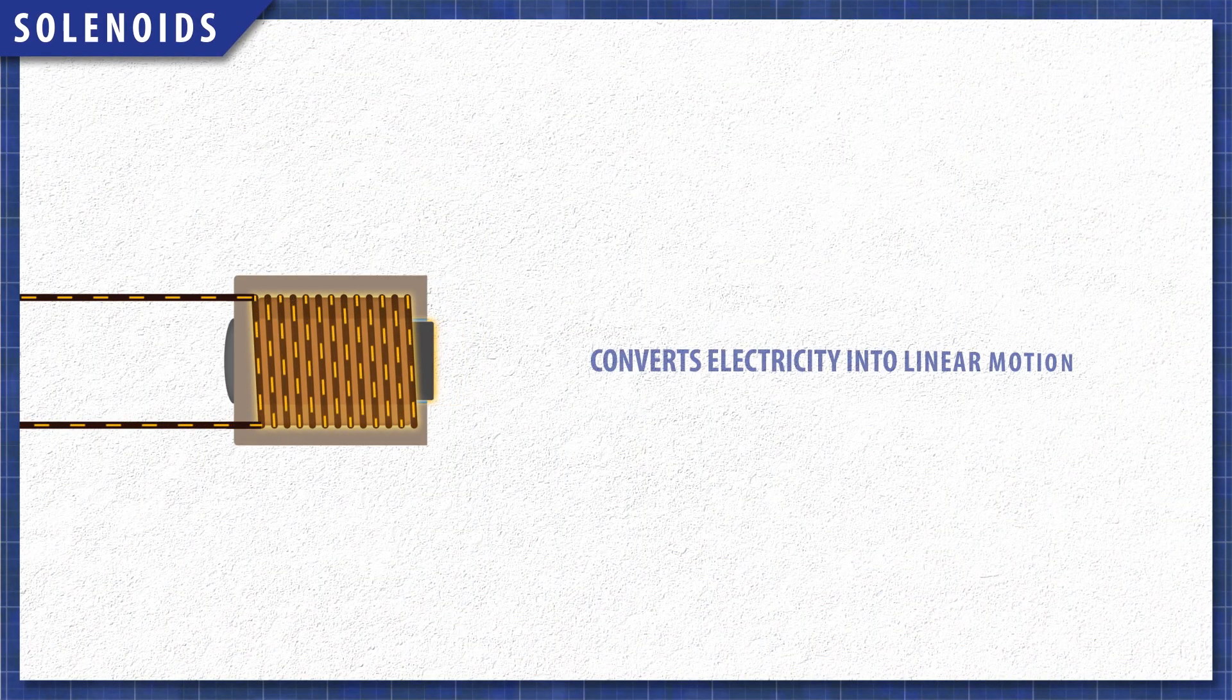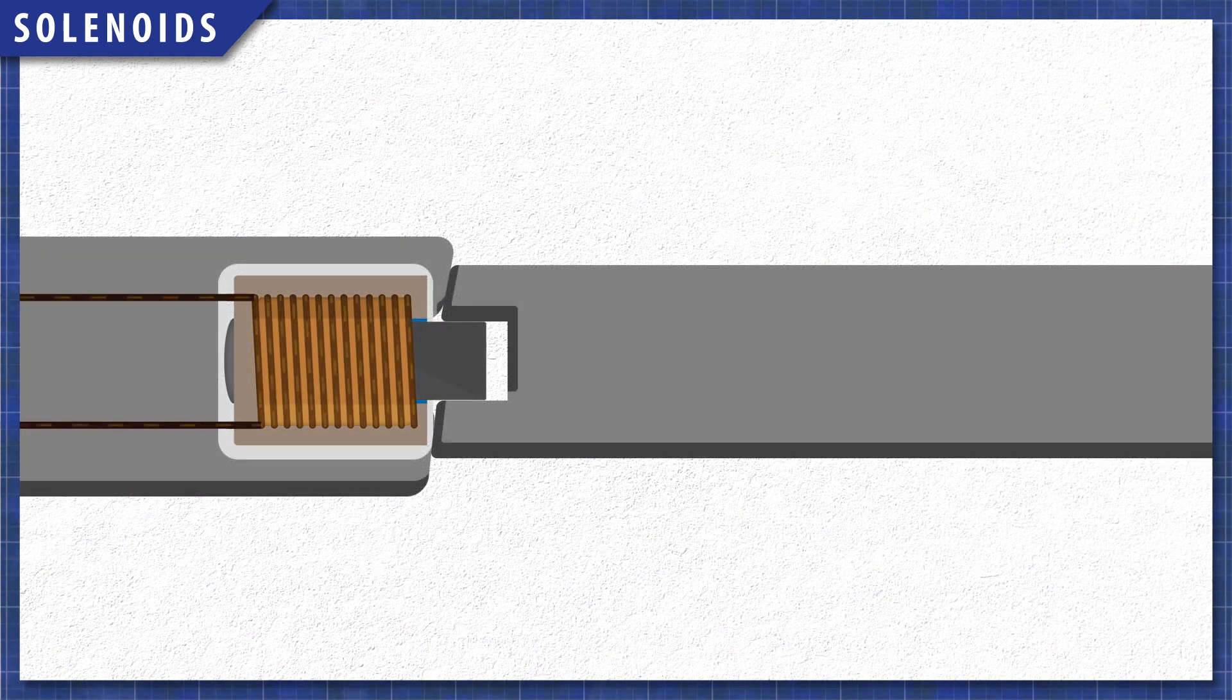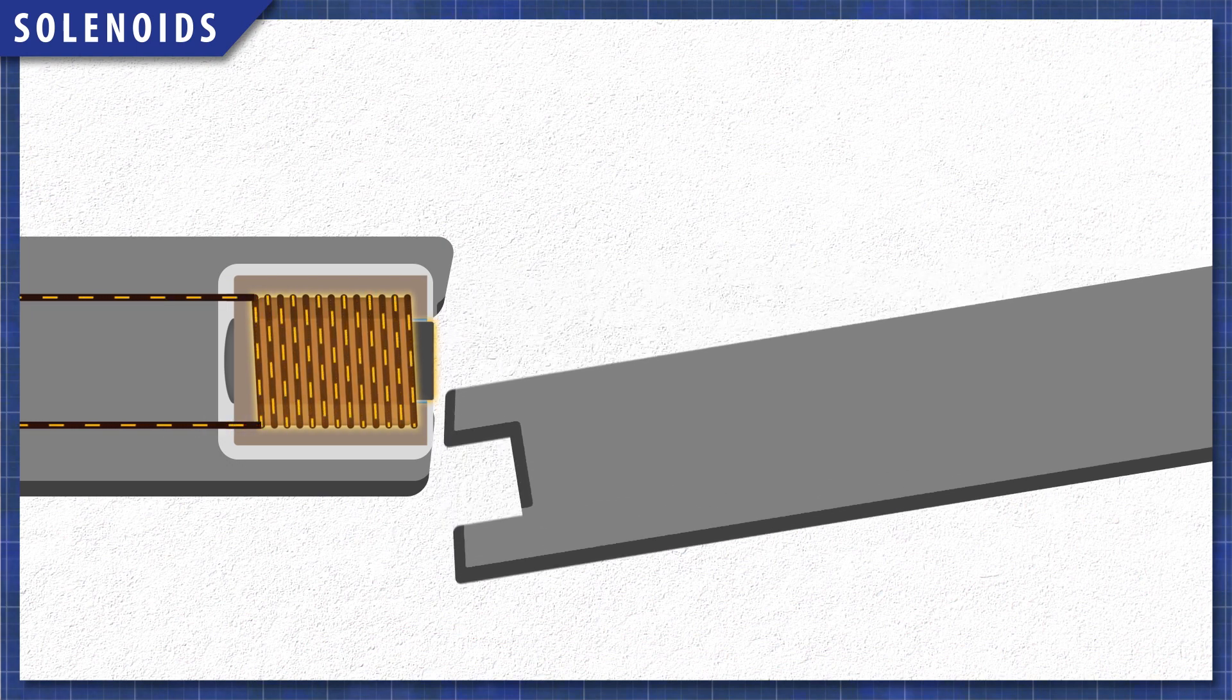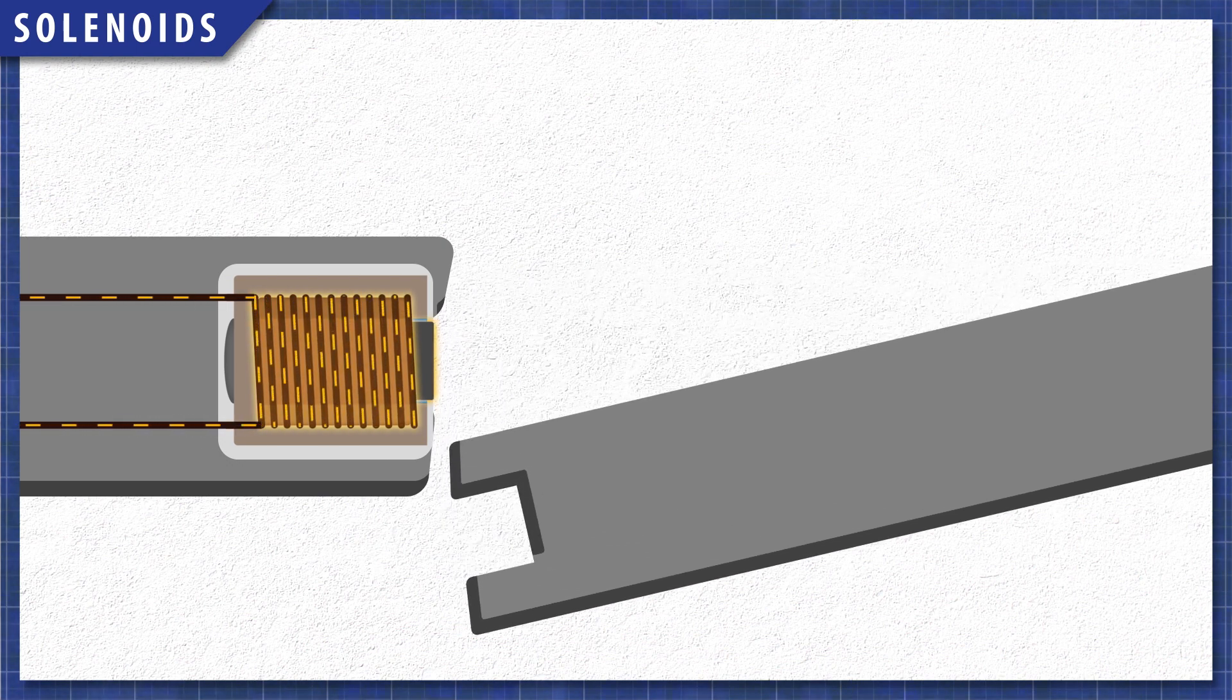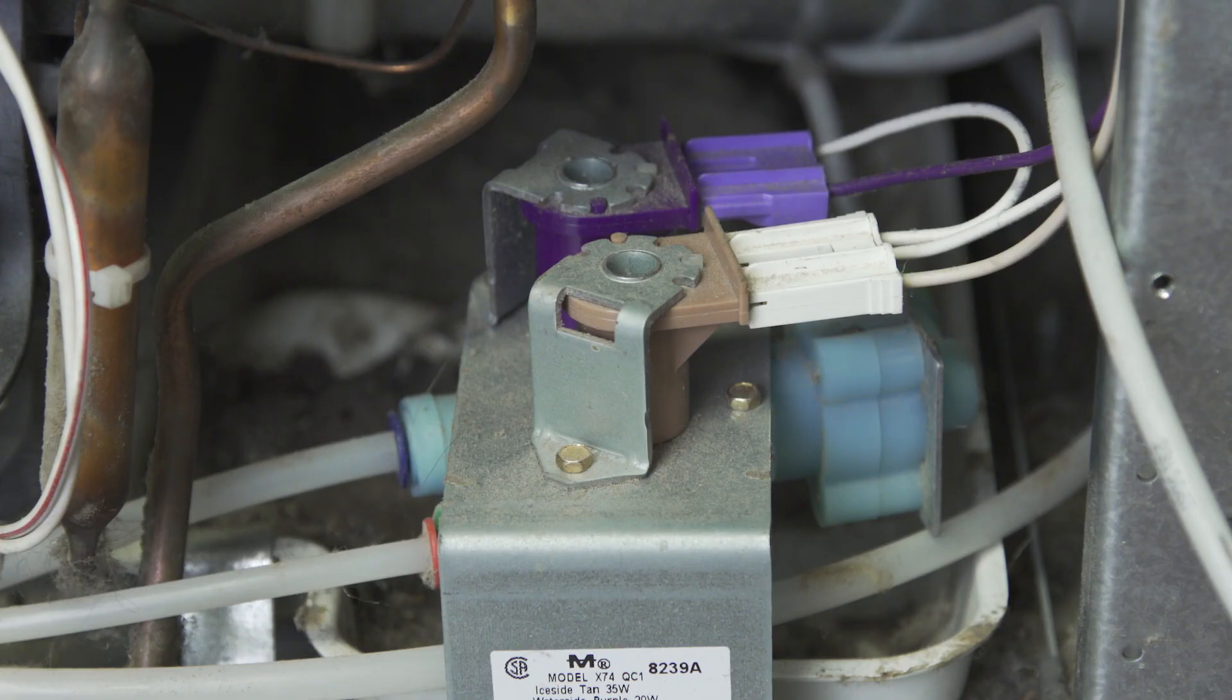Solenoids use small electromagnets to convert electricity into linear mechanical motion. This allows for the remote control of door locks, or the control of water valves in washing machines, dishwashers, and refrigerators.